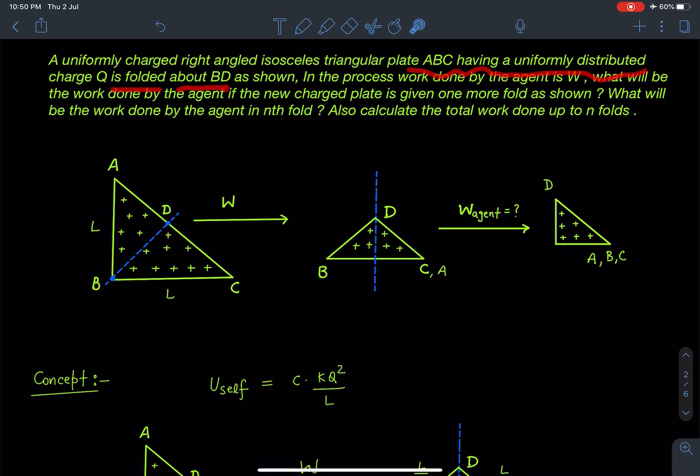is folded about line BD as shown. In the process, work done by the agent is W. What will be the work done by the agent if the new charged plate is given one more fold as shown in the figure? What will be the work done by the agent in nth fold?